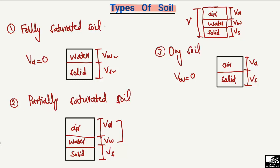To summarize, depending on the saturation level, we have three types of soil: fully saturated soil, which contains only water and solids; partially saturated soil, which contains all three components — air, water, and solid; and dry soil, which contains only air and solid with no water present. Hope you guys understand, and don't forget to subscribe to our channel for daily civil engineering videos.